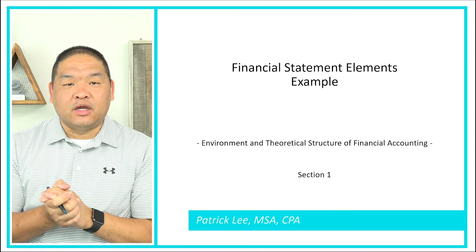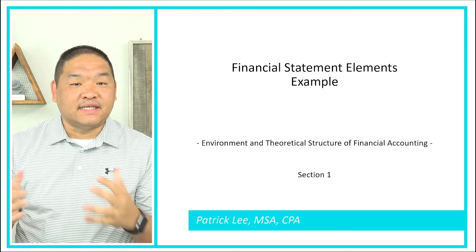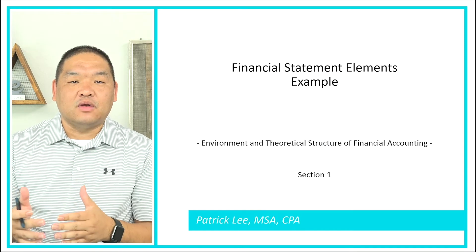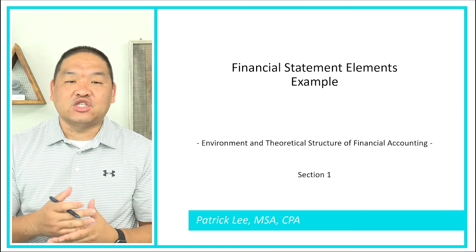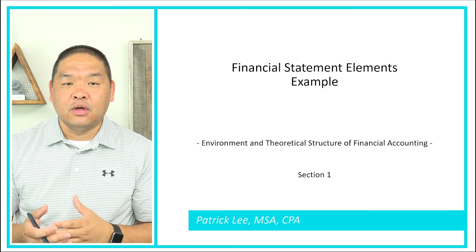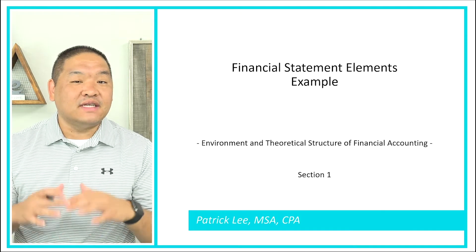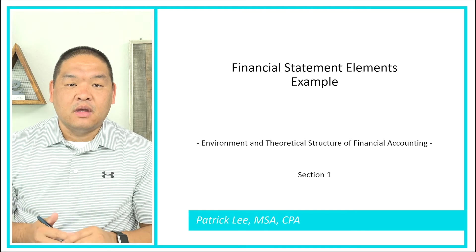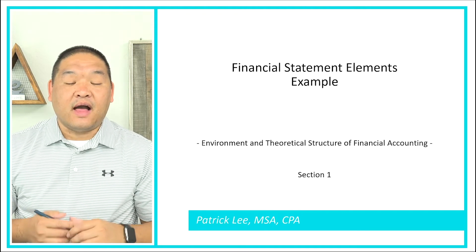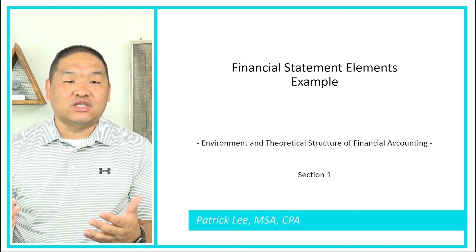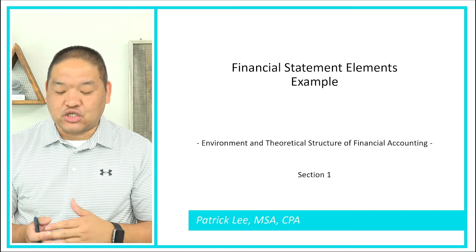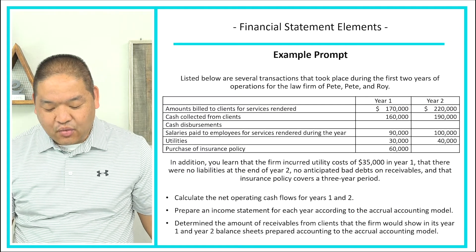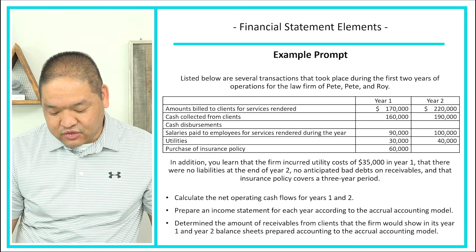In this last lesson in this section, we are going to go over a financial statement example — specifically a cash and accrual example — looking at the activities of an organization during a set period of time and then classifying the transactions based on cash or accrual. Let's take a look at our example prompt.